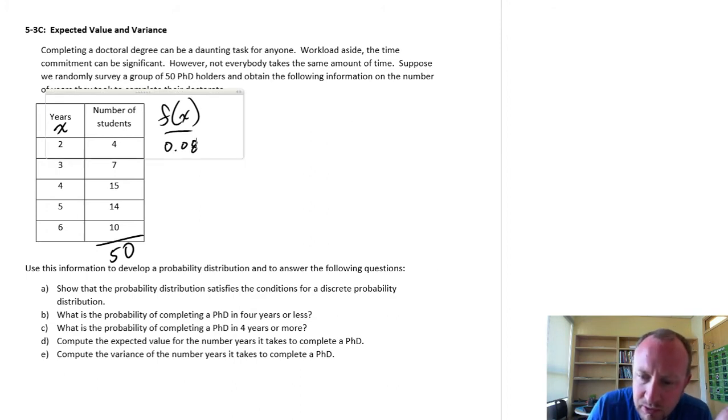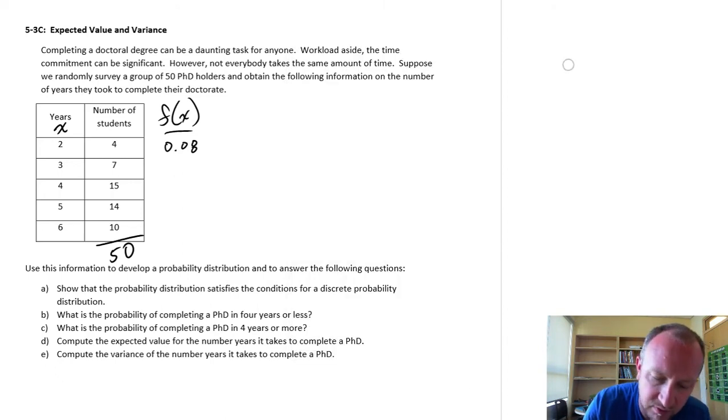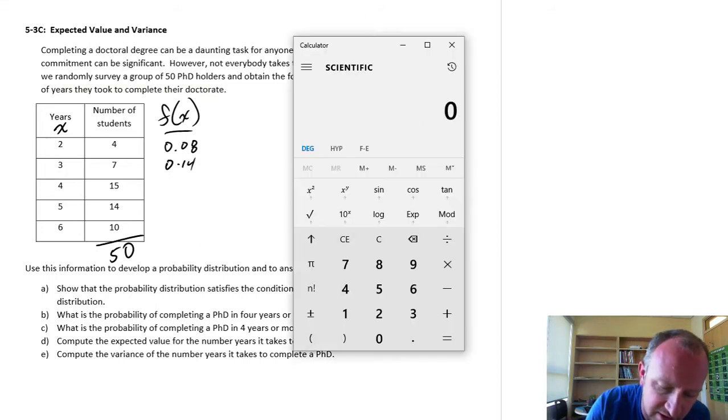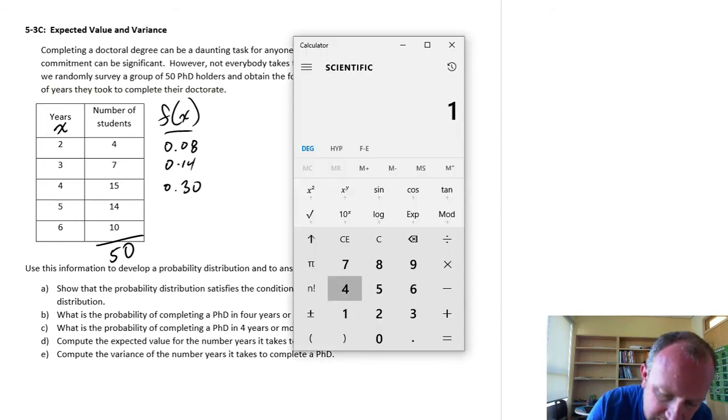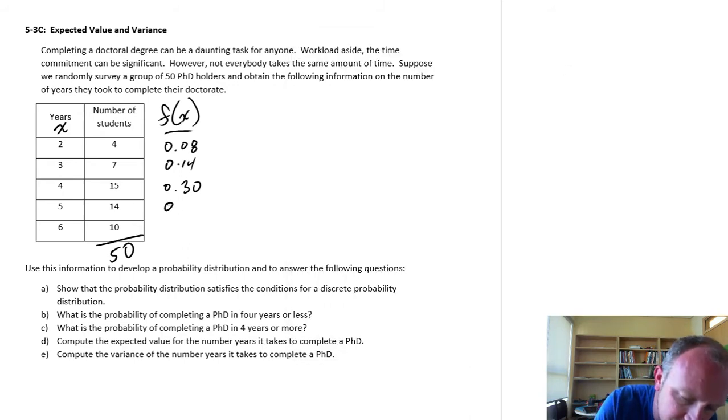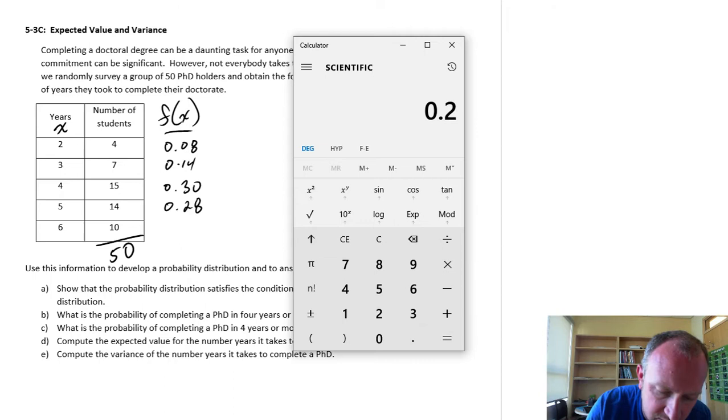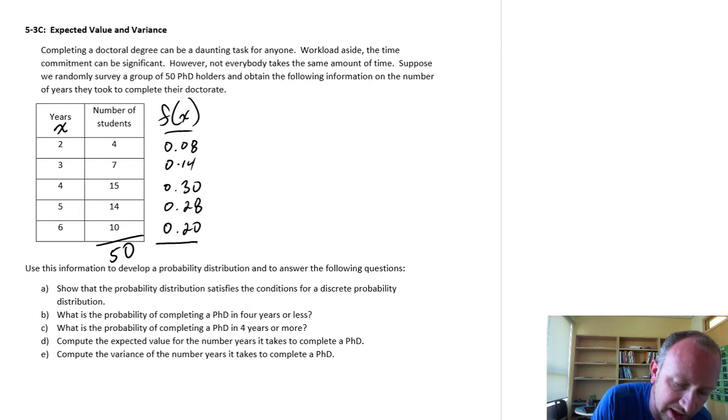If we continue on, for those who took 3 years, that was 7 out of 50, so that's 0.14. Randomly select somebody with a PhD, 14% chance that they took 3 years to complete. Let's go through the rest of these. We have 15 out of 50 took 4 years, so there's 0.3. 14 out of the 50 took 5 years, so there's 0.28. And finally, 10 out of the 50 took 6 years, so that's 0.20. Nobody took less than 2 years, and nobody took more than 7 years.